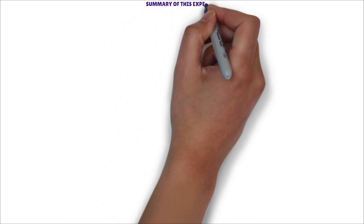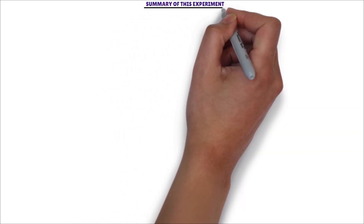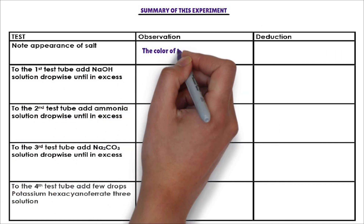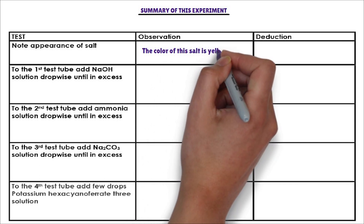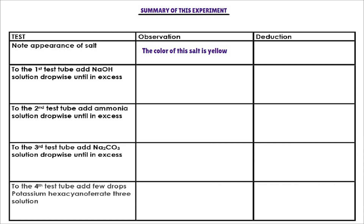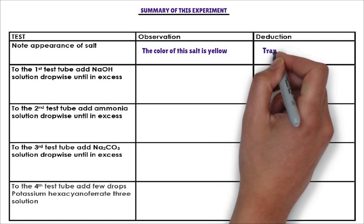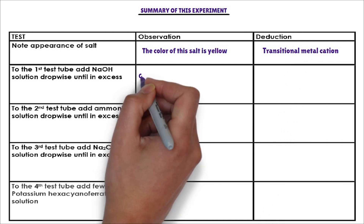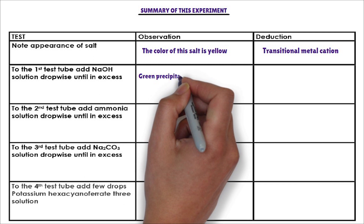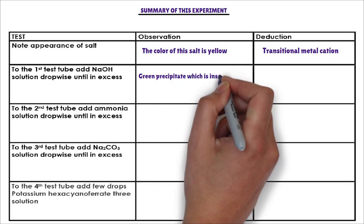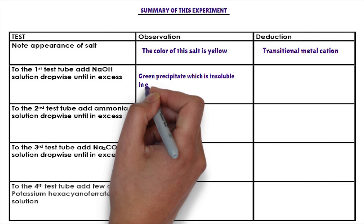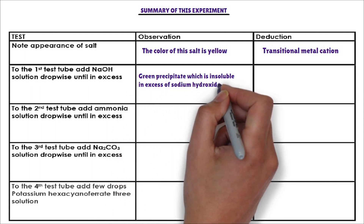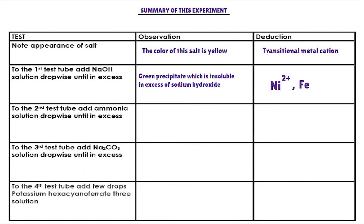Summary of this experiment. Note the appearance of the salt — the colour of the salt is yellow. Yellow colour indicates that the cation present in the salt is a transitional metal cation. To the first test tube, sodium hydroxide is added dropwise. The cation that forms a green precipitate with sodium hydroxide, insoluble in excess, is nickel-2-ion and iron-2-ion.